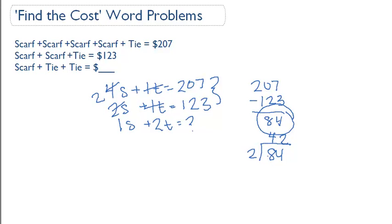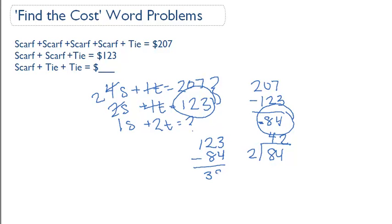Now let's find the cost of a tie. We know that two scarves and one tie cost one hundred and twenty three dollars, and we know that two scarves cost eighty four dollars. So we can just subtract them: one twenty three minus eighty four is thirty nine dollars.